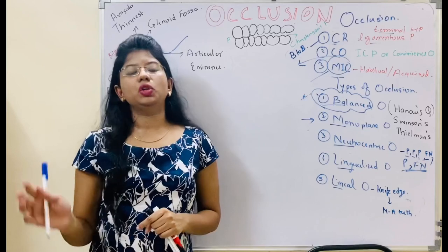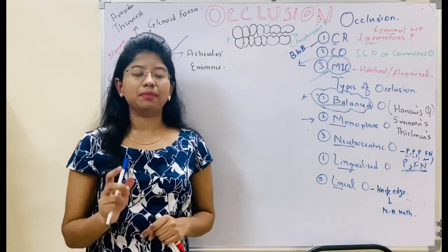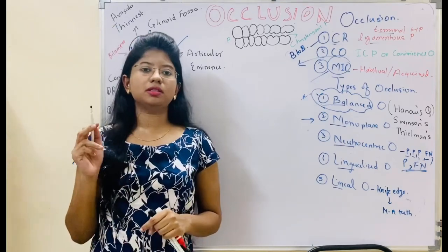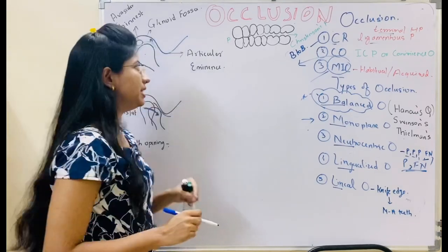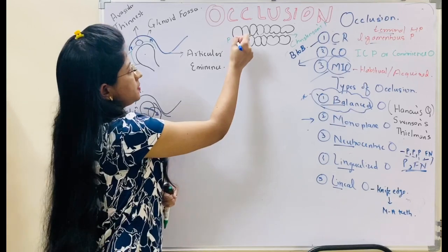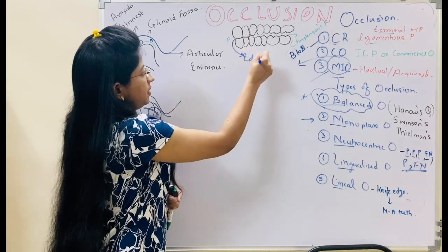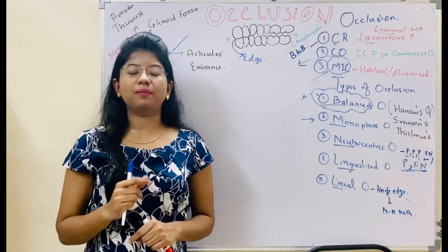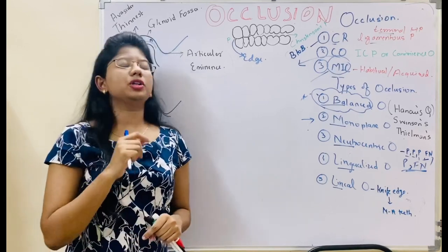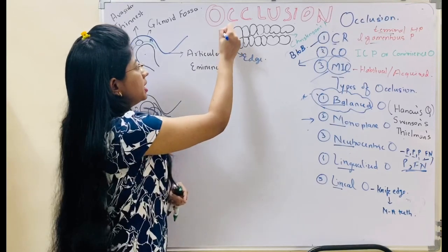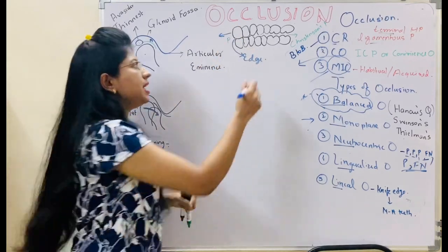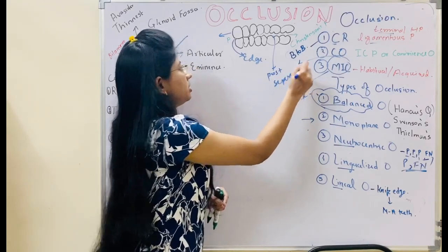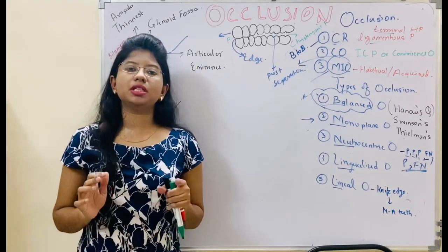Now we will move on to balanced occlusion. Before that, we will see Christensen's phenomena as seen in natural dentition. When we bring our anterior teeth edge to edge — that is protrusion — we get posterior separation, and that separation is called Christensen's phenomena.